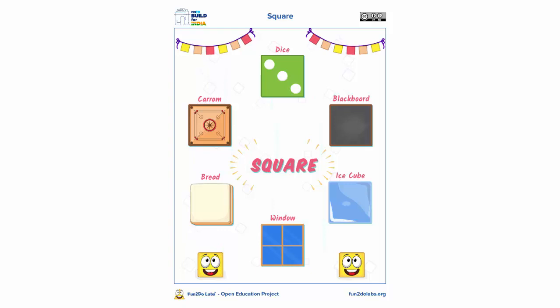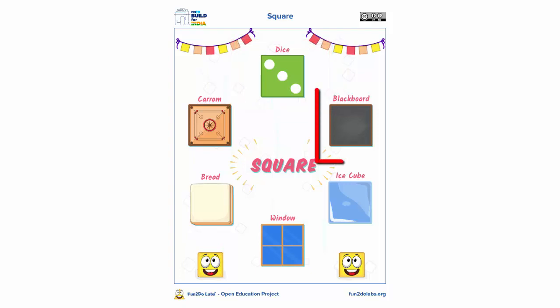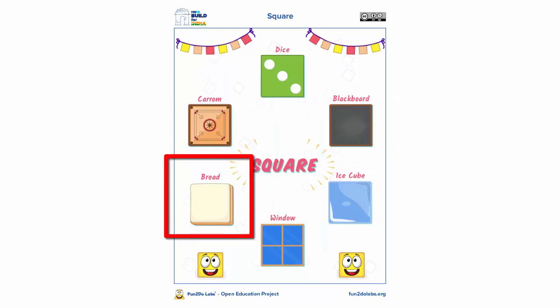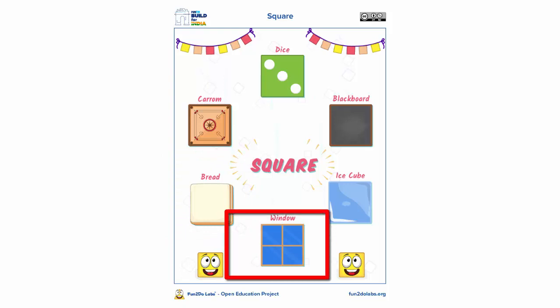What color is the square? The dice is similar to square. The blackboard is similar to square. The bread is similar to square. The window is similar to square.